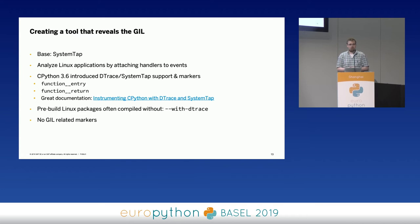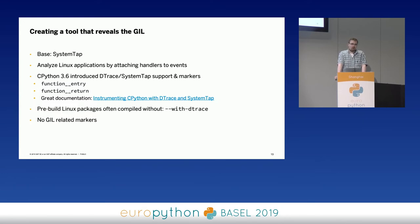CPython 3.6 introduced support for SystemTap and DTrace, and there are already some markers and event emitters you can use to analyze your Python application with SystemTap. For example, we have function entry and function return, which are invoked every time the interpreter enters or returns from a Python function. The problem is that most pre-built Linux packages don't include the Python interpreter compiled with DTrace support, so the markers are not there and you cannot use them. Also, there are no markers for GIL-related areas.